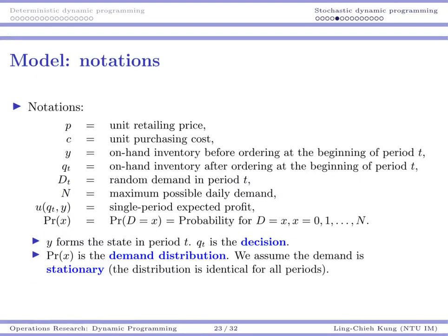Let's introduce our notations. We have p, which is the unit retailing price. We're going to sell products and for each product we sell, we earn something. We have c as the unit purchasing cost. That's the cost for us to pay to our suppliers to get one product. We still have y, which is the on-hand inventory before ordering at the beginning of period t. You can call it y or yt.